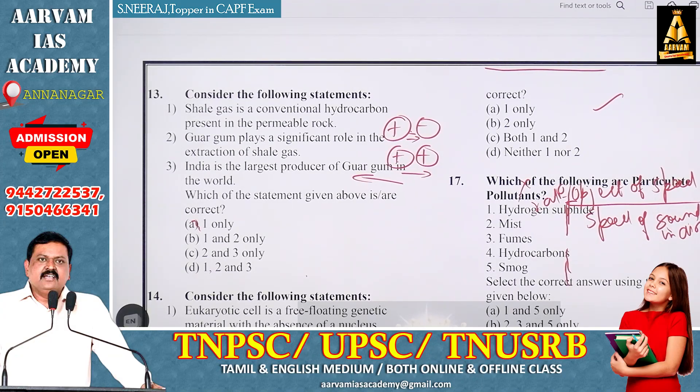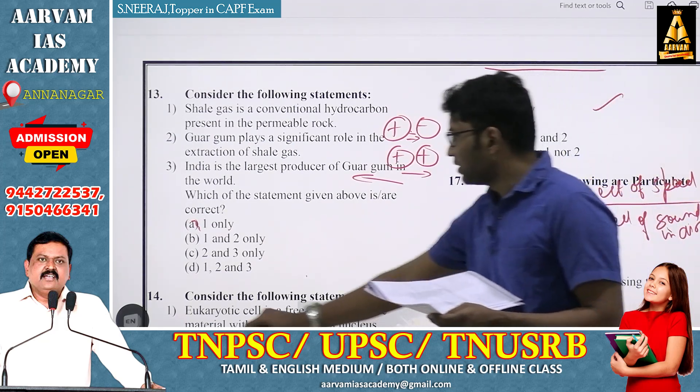Shale is not a conventional hydrocarbon present in permeable rock. Shale is one of the unconventional hydrocarbons, found in impermeable rock.